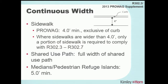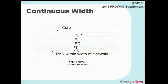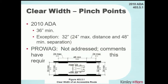Pedestrian refuge islands — whether a channelized right-turn lane or a median cut-through ramp — require a minimum width of five feet to allow two wheelchairs to pass each other. All images labeled 'Figure R' in this presentation come from ProAG. The width is exclusive of the curb. The 2010 ADA has an allowance for pinch points, but that was really intended for hallway examples with temporary pinch points.